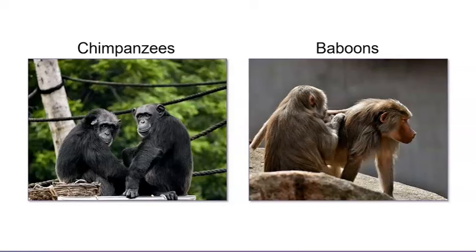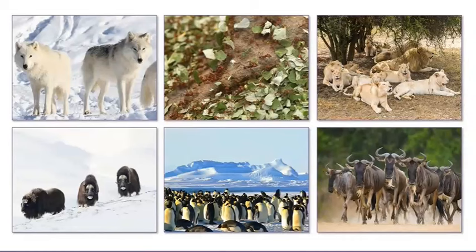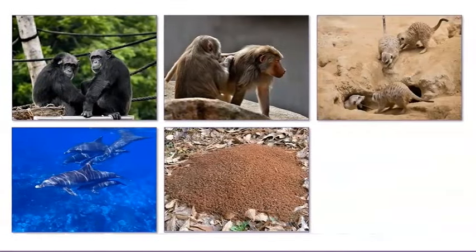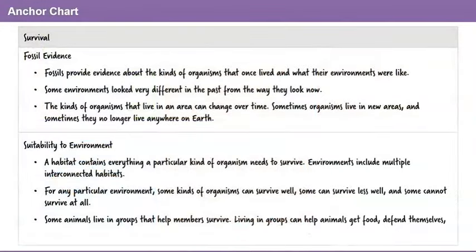We've seen some ways groups of meerkats, fire ants, and dolphins can cope with change to their system. In the last few lessons, we've learned that animals live in groups to find food and to defend themselves. And today we learned that living in groups also helps animals cope with change. Let's add this update to our anchor chart. Now it will say some animals live in groups that help members survive. Living in groups can help animals get food, defend themselves, and cope with change.